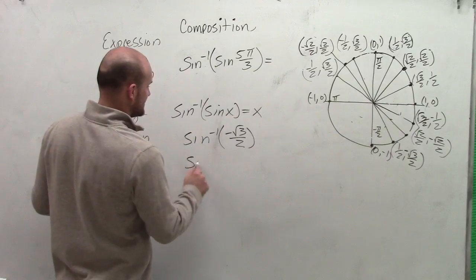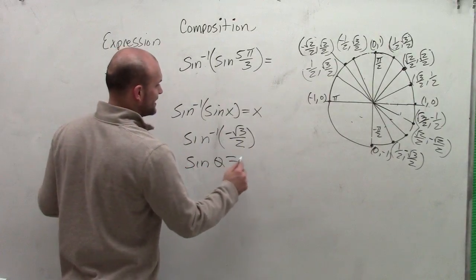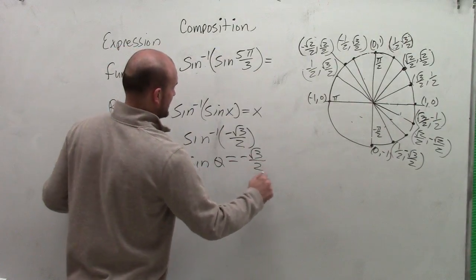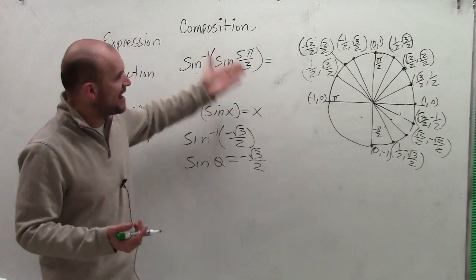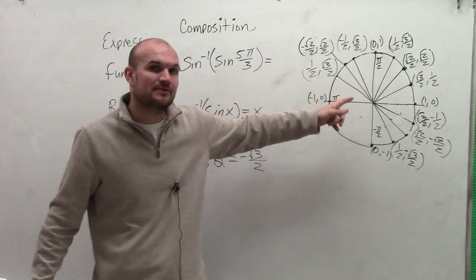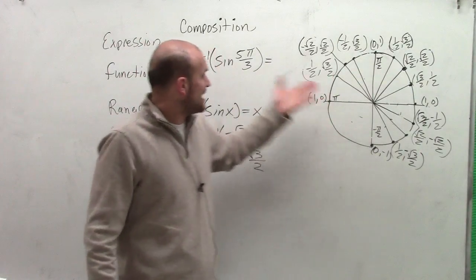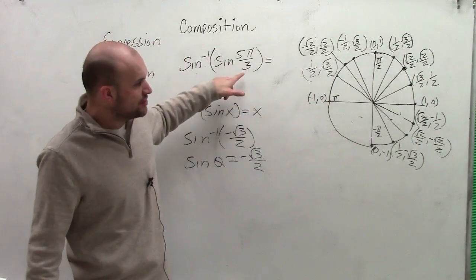Now, we can't use 5π over 3 because 5π over 3 is not within my range of my inverse function.